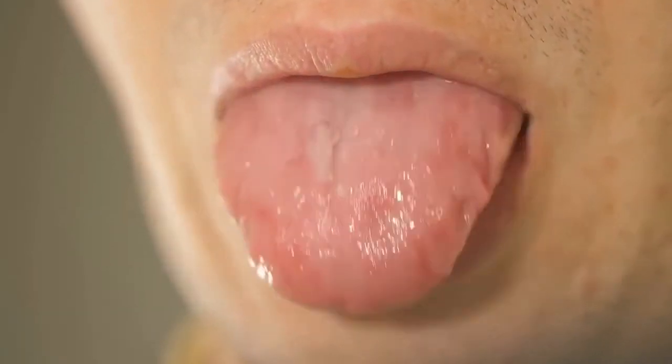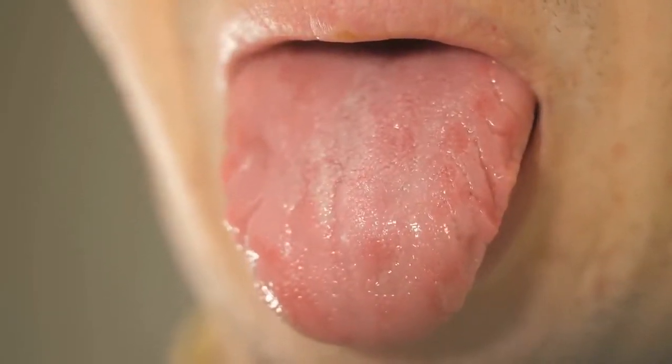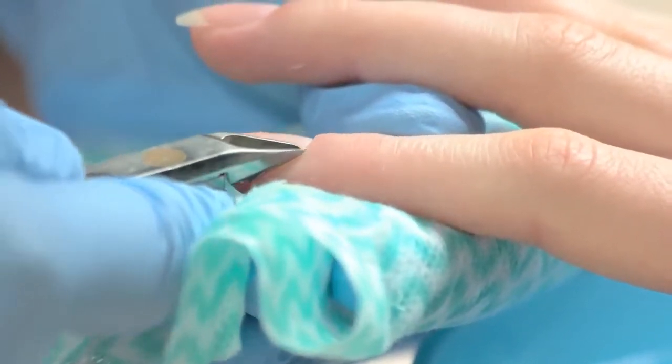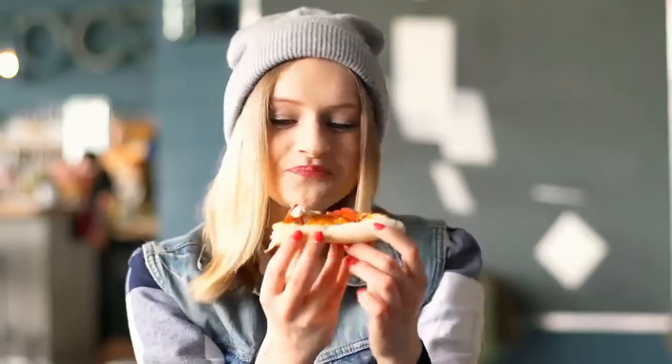Number 21. Like fingerprints, each human tongue has its own unique print. Number 22. Fingernails grow about 4 times faster than your toenails. Number 23. In a lifetime, a human body will process about 100,000 pounds of food.